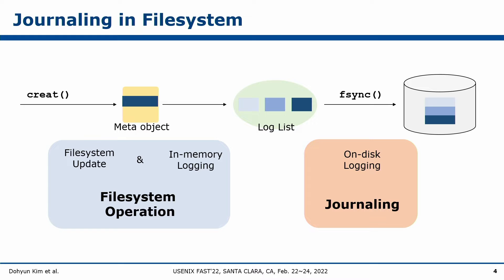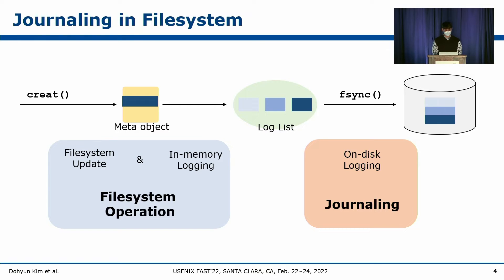Most journaling file systems have two types of operations. The first is file system operations such as create or unlink system calls. It updates the in-memory state of the file system and delivers the updated log to the journaling process — we define this as in-memory logging. The second is journaling operation, forced by an fsync system call, called on-disk logging.